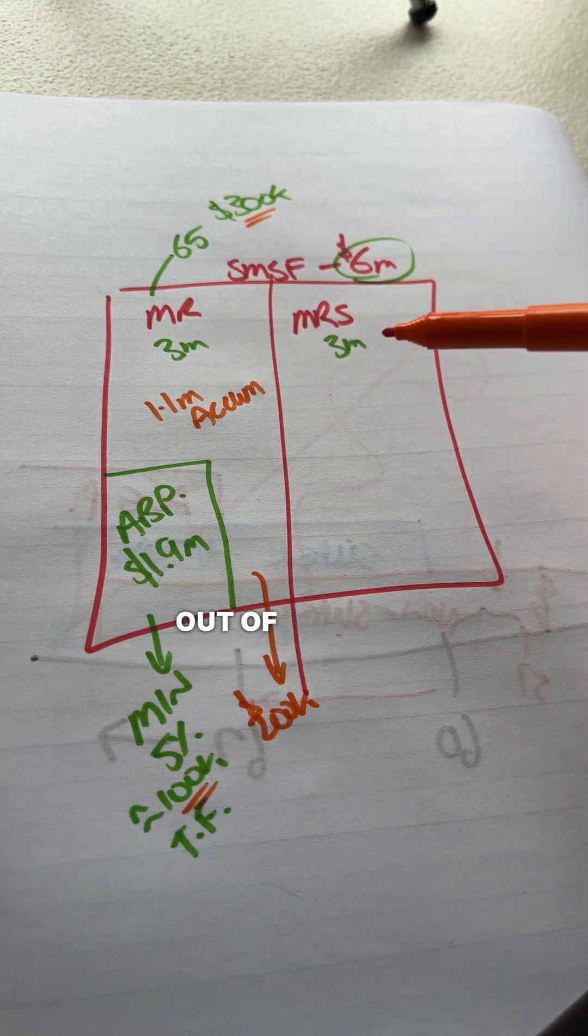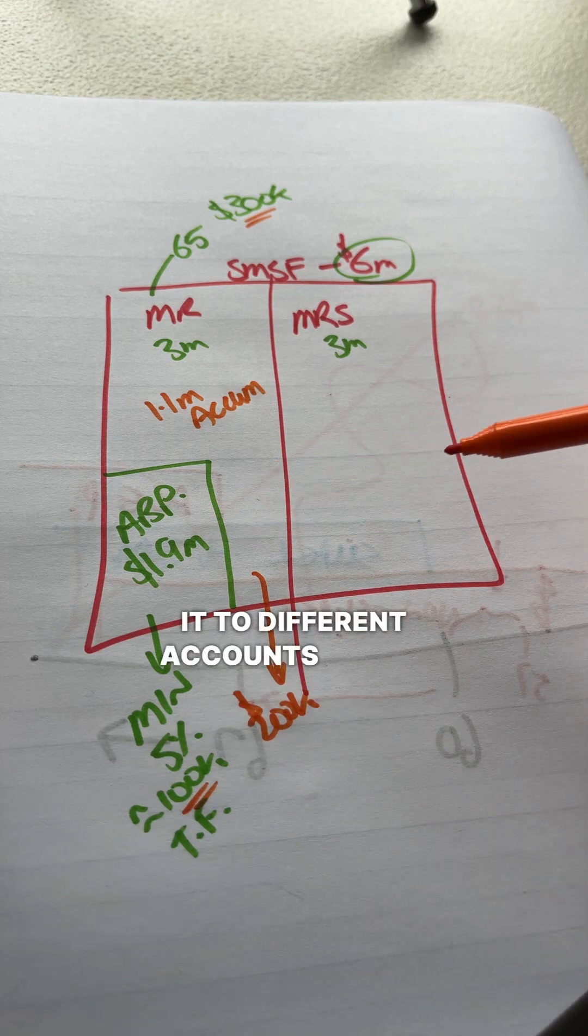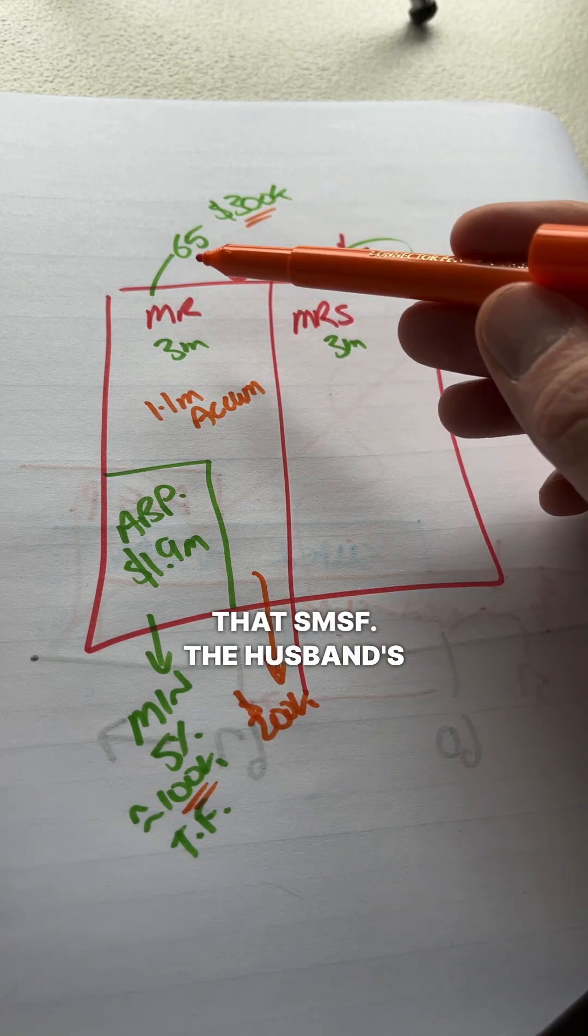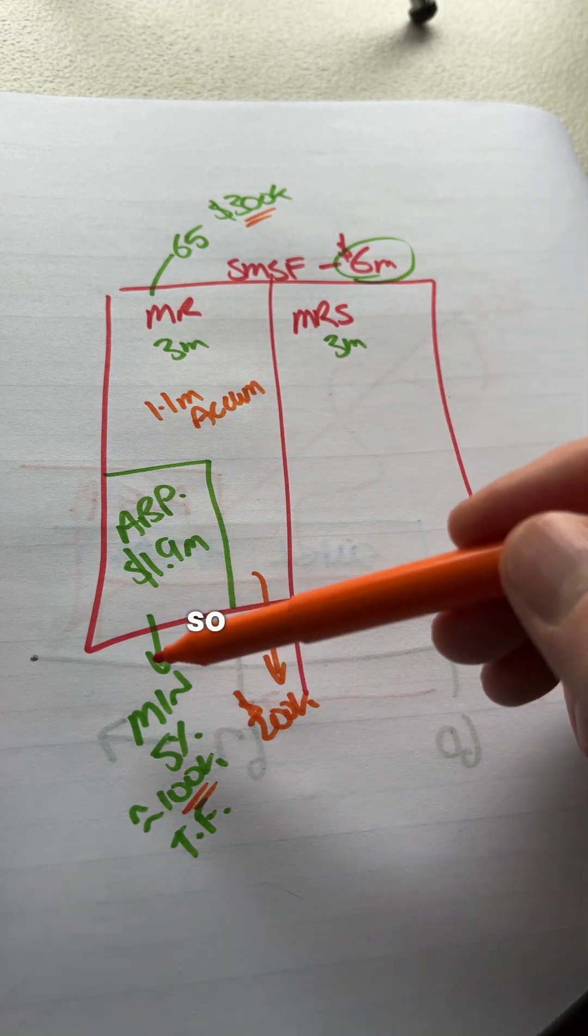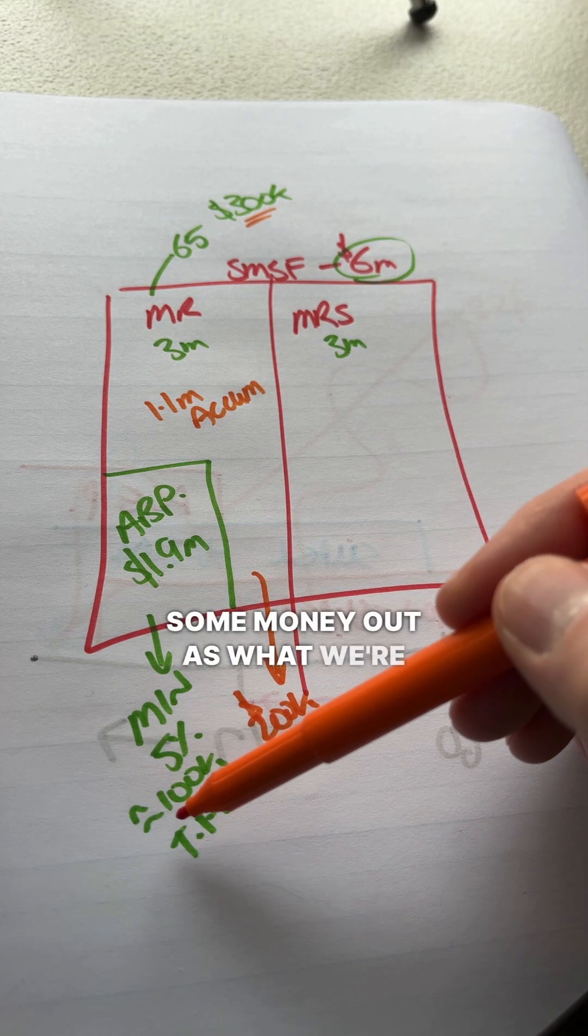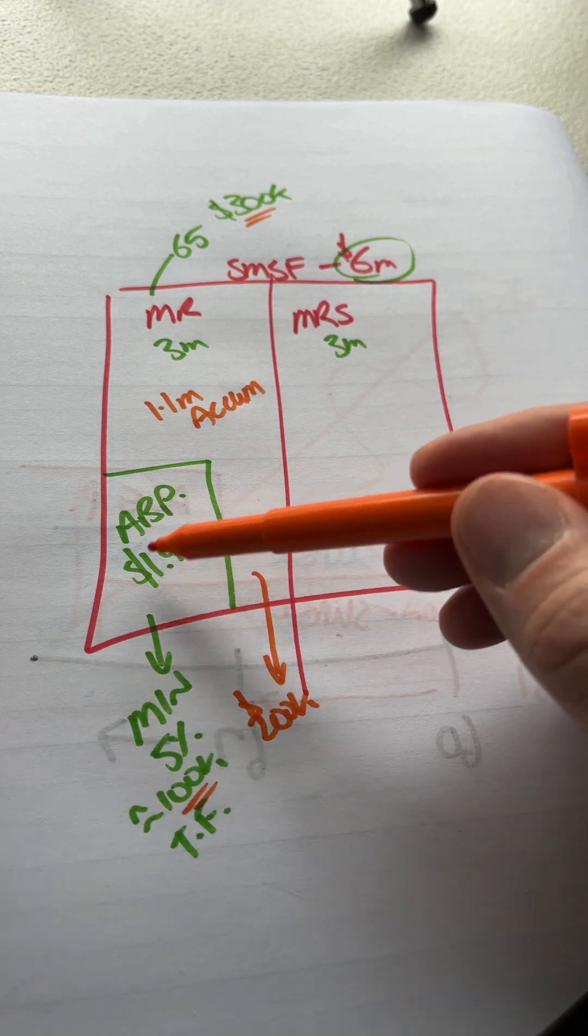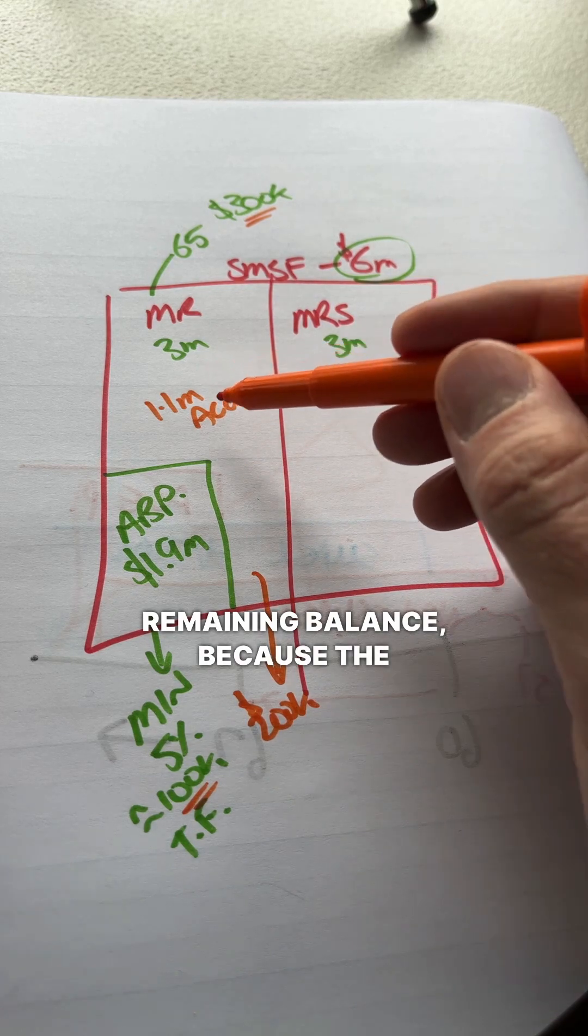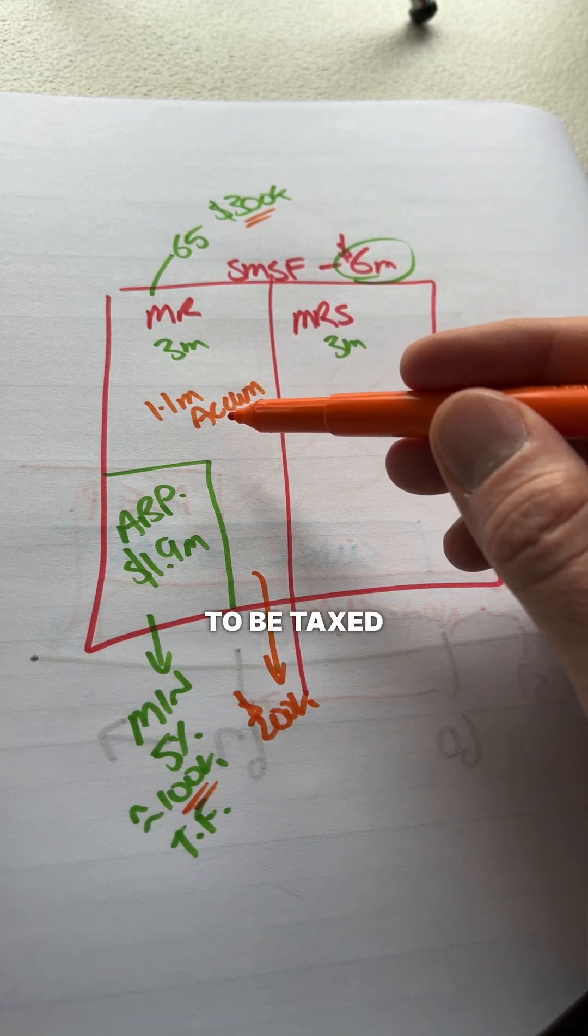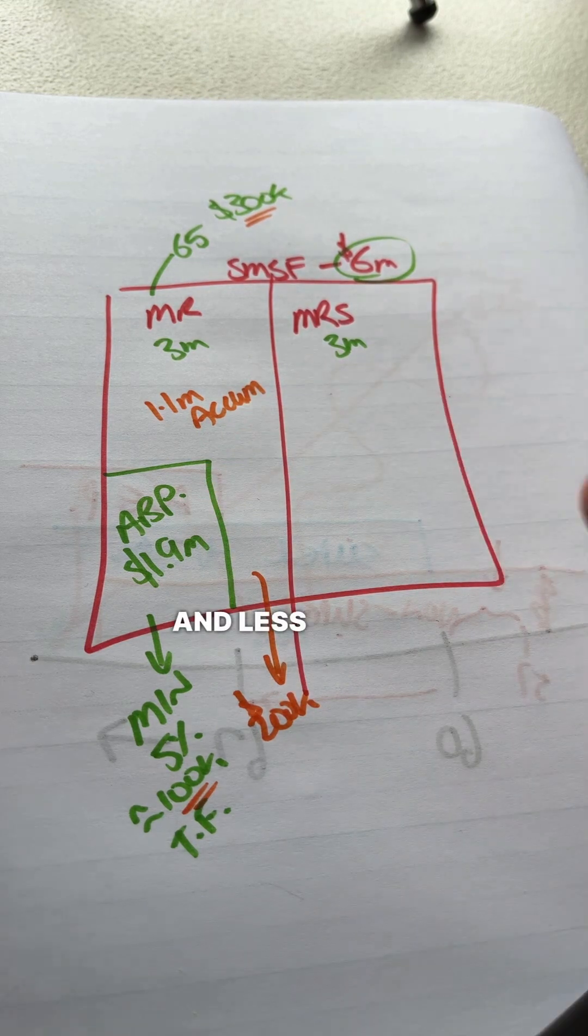So when you're taking money out of an SMSF, you can allocate it to different accounts within that SMSF. The husband's being over the age of 65, he has full access to all of his parts. So we need to take some money out as what we're going to call a pension payment to satisfy the minimum pension requirements for here to get the tax-free earnings on this. And then the remaining balance, because the accumulation fund will continue to be taxed at a maximum of 15%, the preference is to take more money from here and less money from here.